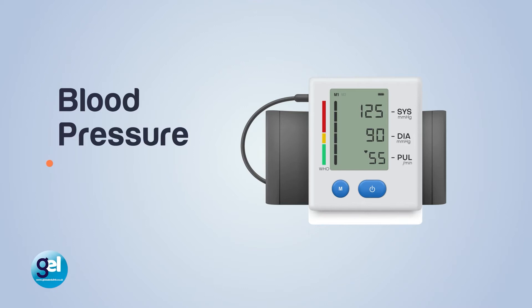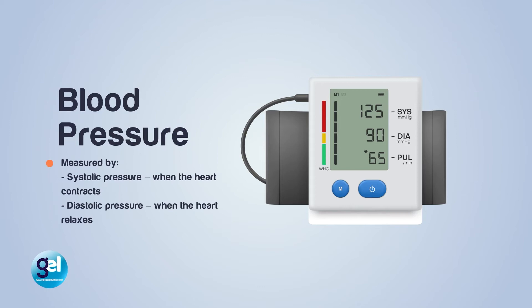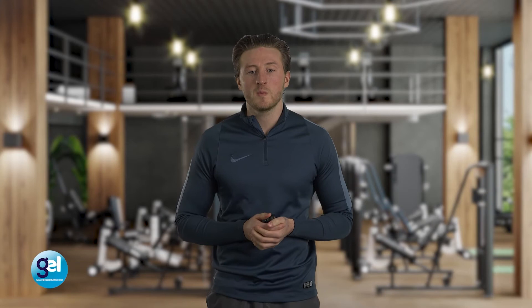When we take a blood pressure reading with a monitor, we take two readings: systolic pressure and diastolic pressure. Systolic pressure is when the heart contracts, and diastolic pressure is when the heart relaxes. As the heart pumps involuntarily — contracting and pushing blood out — one reading changes and one doesn't change as much, depending on how much blood needs to be pushed around the body. The contraction will increase as heart rate goes up in response to exercise or a stimulus such as fear or running.